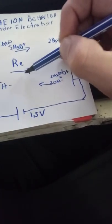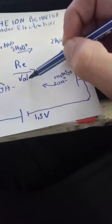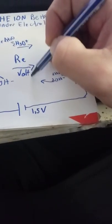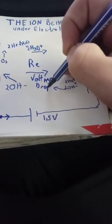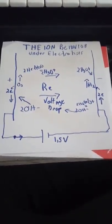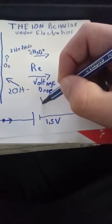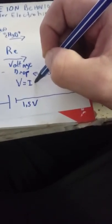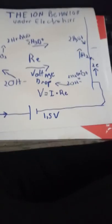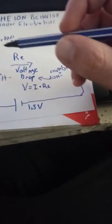We are going to have a voltage drop. This voltage drop is going to be equivalent to the voltage applied. Actually, the voltage drop will be equal to the current times the resistance. So we can also calculate...